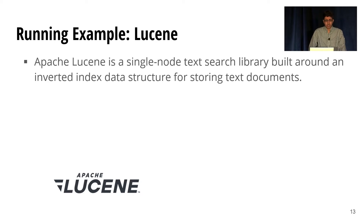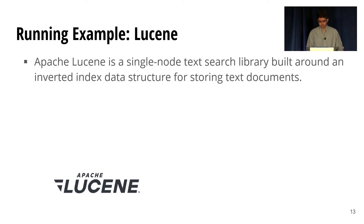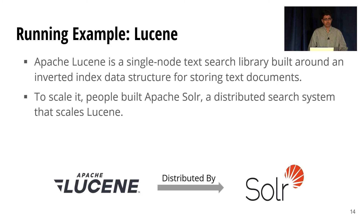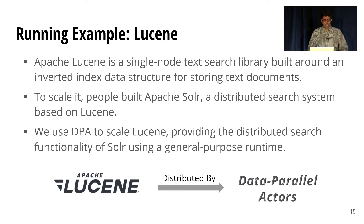Let's do a deep dive into one of the systems we're targeting: Lucene. Lucene is a single-node text search library built around an inverted index data structure for storing text documents — in other words, it runs text search queries very fast. People have wanted fast distributed search for a while, so they built Solr, a distributed search system that scales Lucene. But we can actually use DPA to scale Lucene and provide the distributed search functionality of Solr using our general purpose runtime.